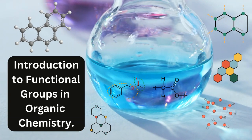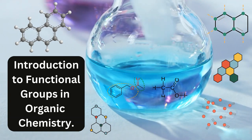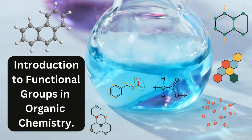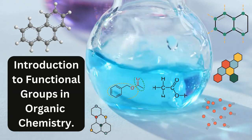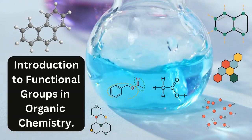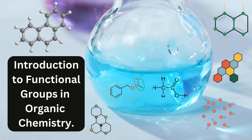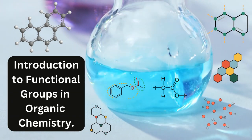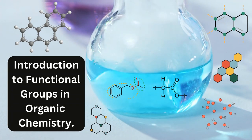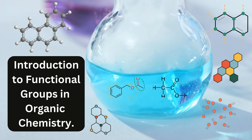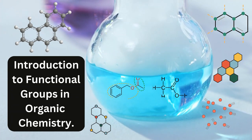A functional group is defined as an atom or group of atoms within a molecule that has similar chemical properties whenever it appears in various compounds. Functional groups are groups of atoms or bonds that define the function of the hydrocarbon that they get attached to.